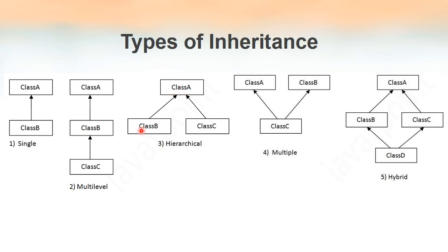Hierarchical inheritance is when one class A is inherited by multiple classes B and C, and those subclasses may further be inherited by other classes — forming a hierarchy. Multiple inheritance means one subclass inherits more than one class at a time. In this example, class C inherits both class A and class B simultaneously, so class C has multiple parents — that is multiple inheritance. You must be able to differentiate between multi-level and multiple inheritance.